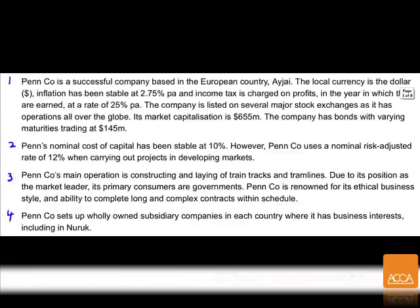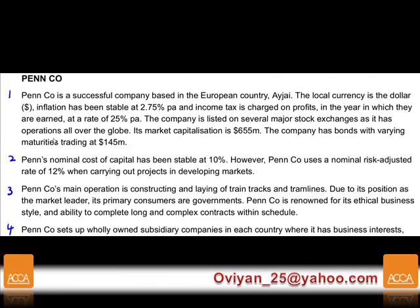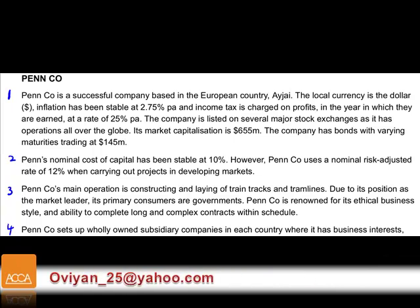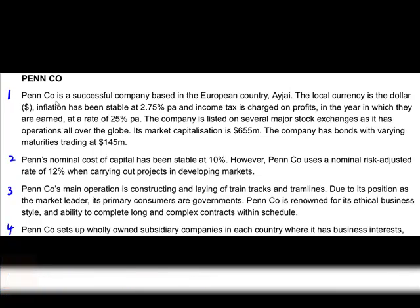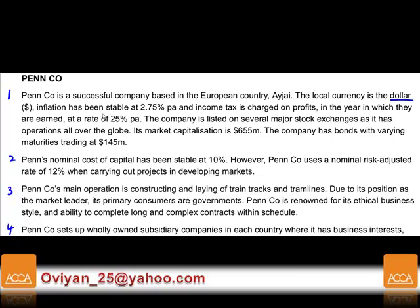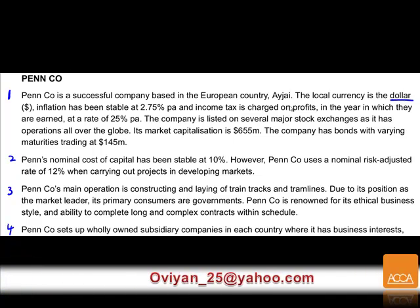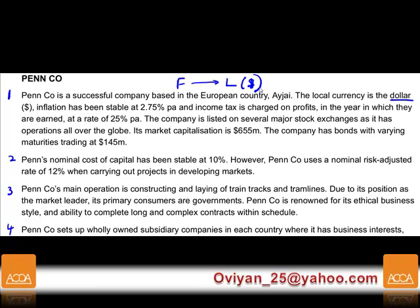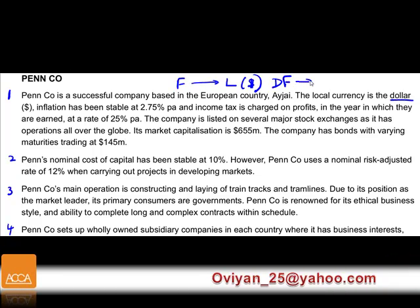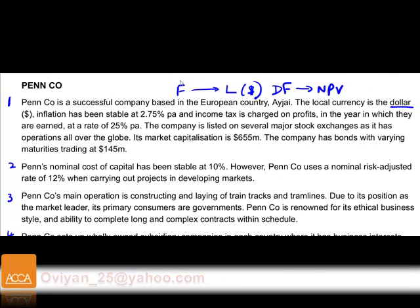Now look at part one, paragraph one. Please name each paragraph as we'll be making reference to them. Pen is a successful company based in a European country, Agay. The local currency is the dollar. Remember, in the required section your cash flows must be in dollars before you discount — that means you convert foreign cash flows to local dollar cash flows, then discount to get your NPV.